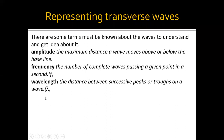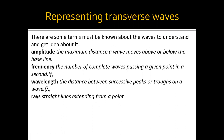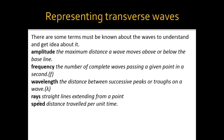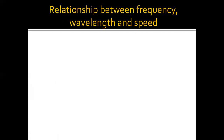The unit of wavelength is meters, and the unit of frequency is hertz. We also have rays — straight lines extending from one point. And we have speed, which is distance traveled per unit time. The unit of speed, as you know, is meters per second. So what is the relationship between frequency, wavelength, and speed?